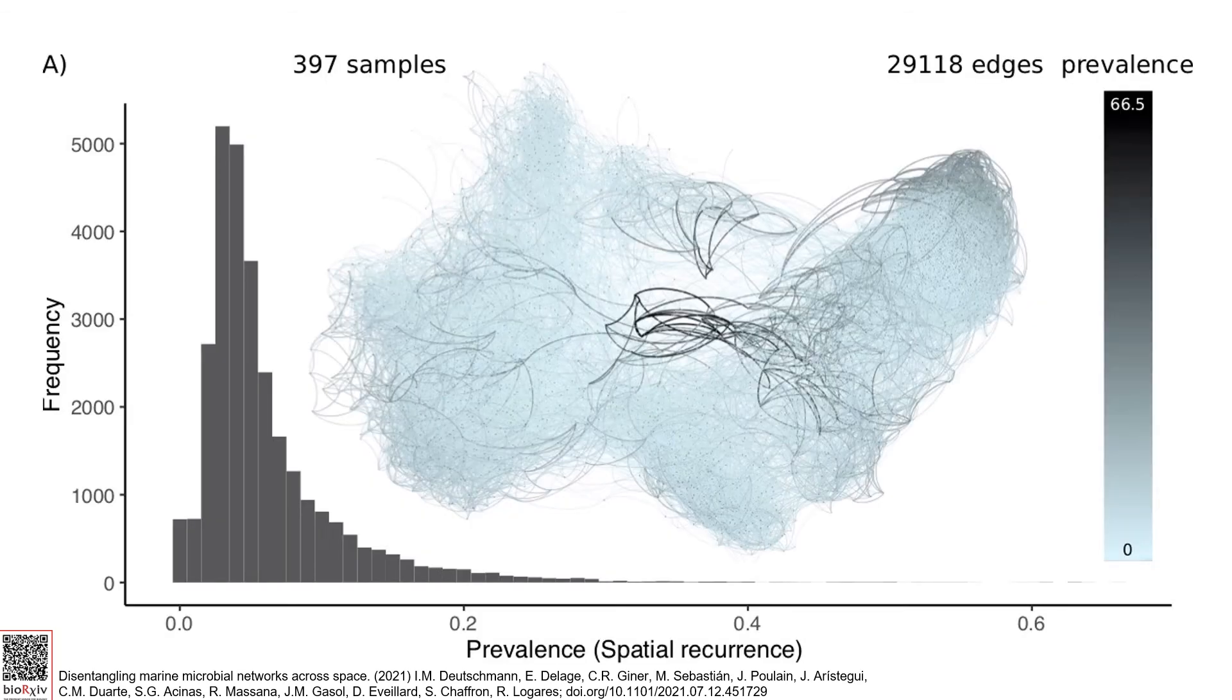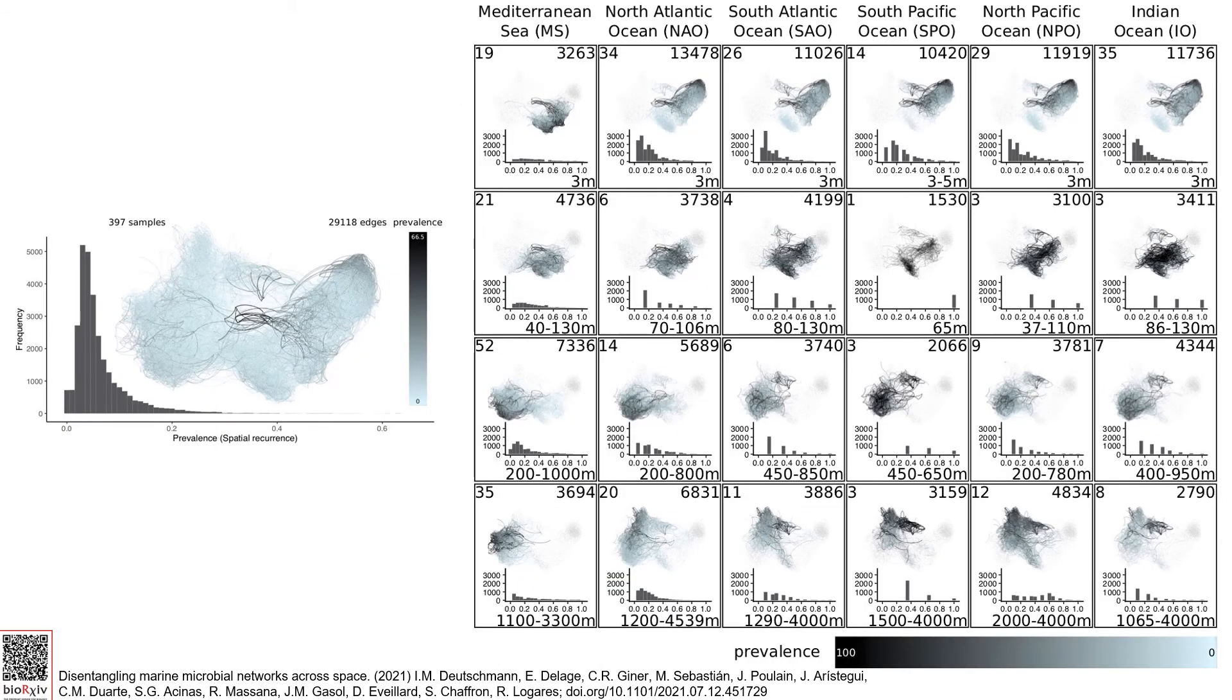I adjusted the approach for spatial data to disentangle the distribution of associations. So, first I constructed a single static network. Then I determined sample-specific subnetworks. We studied how the network changes across vertical and horizontal scales. And we found that regional associations increase with depth. And that association distribution did not mirror microorganisms distribution.